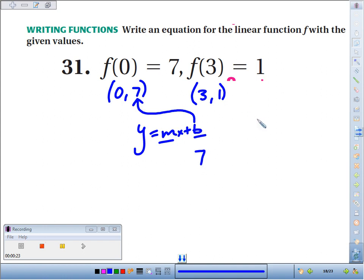The slope, use our slope formula, y minus y, so 7 minus 1. Then I need to do 0 minus 3 for my x's. I get 6 over negative 3. I get a slope of negative 2.